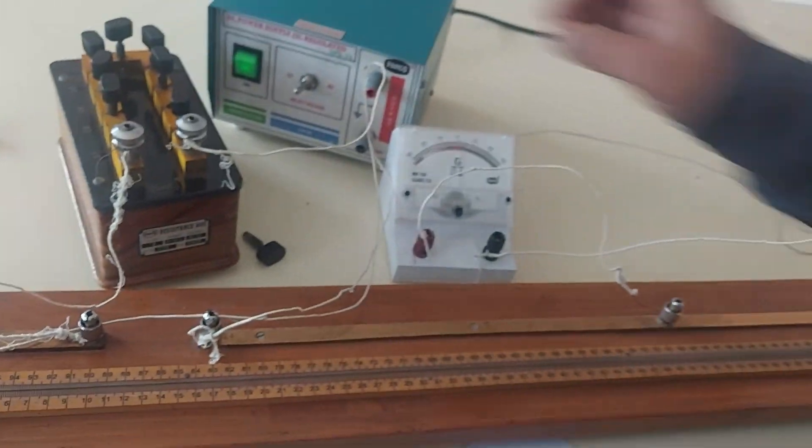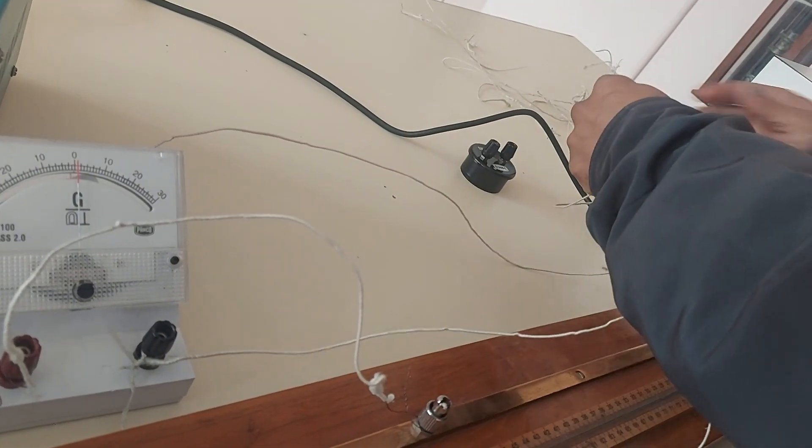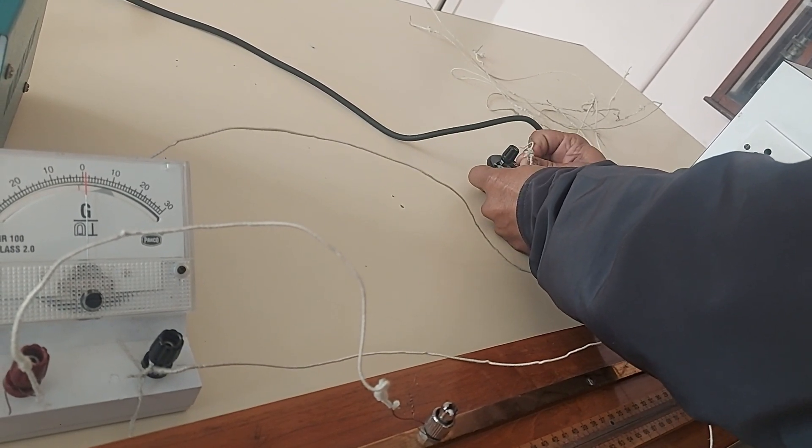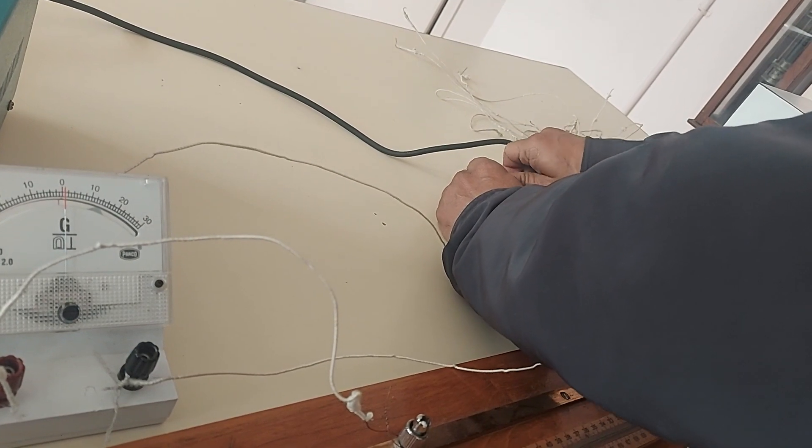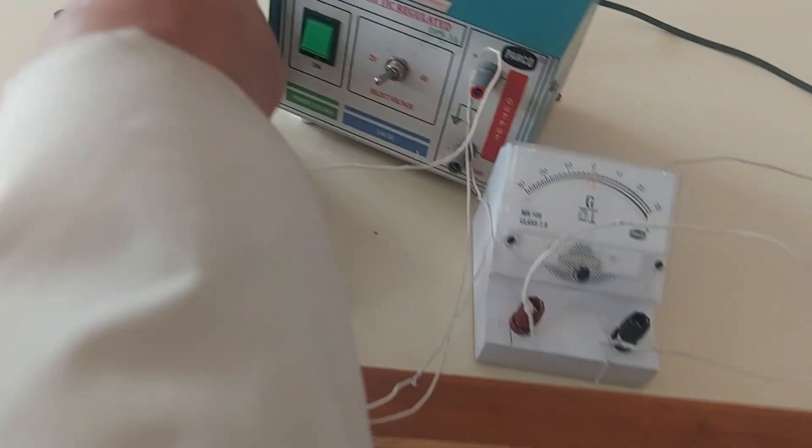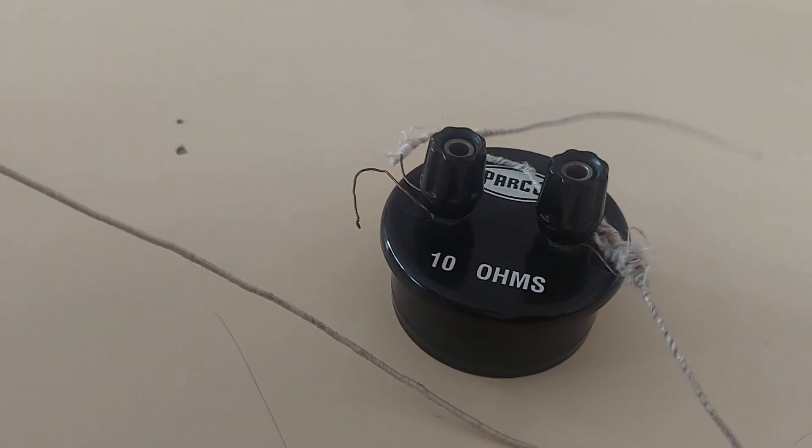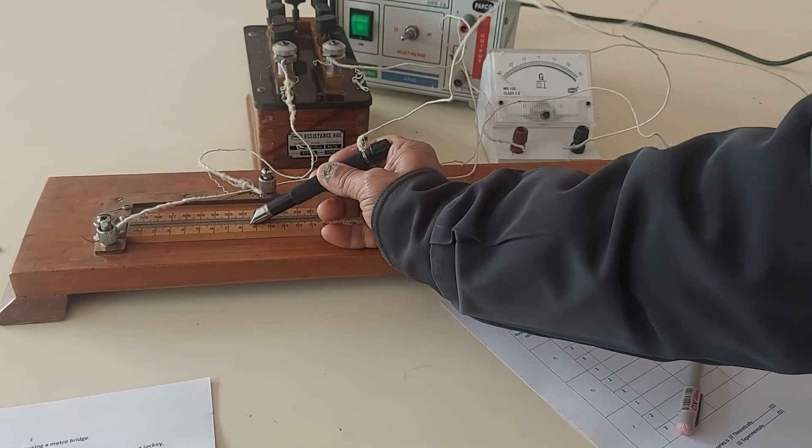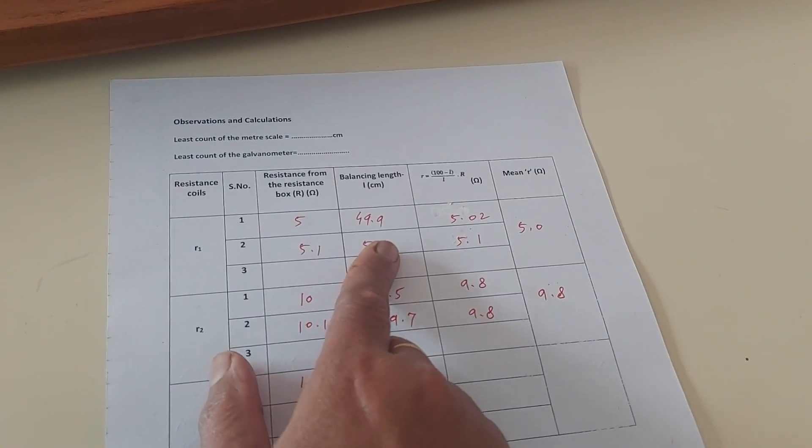Now with the second standard resistance. Just replace this with the second one given. You will be given two standard resistances. Change the device and repeat the same procedure with R2. Switch it on, check for deflection. Now this is 10 ohms, can you see that? Earlier we were using 5 ohm and this is now 10 ohm. Check for deflection. Now before we begin with the observations, we need to calculate the values. We have performed the experiment for R1 and R2.